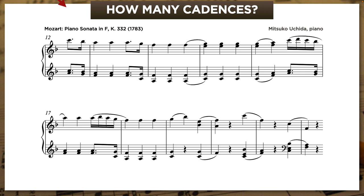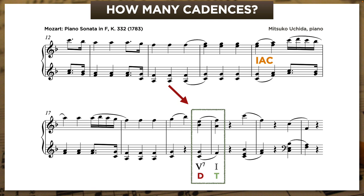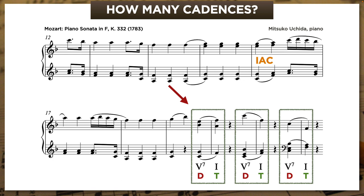If you're a regular viewer, you probably had no trouble spotting the imperfect authentic cadence in bar four. And you probably noticed that the second phrase also ends with five going to one—not once, not twice, but three times. Now, they can't all be cadences, so which one is the cadence?